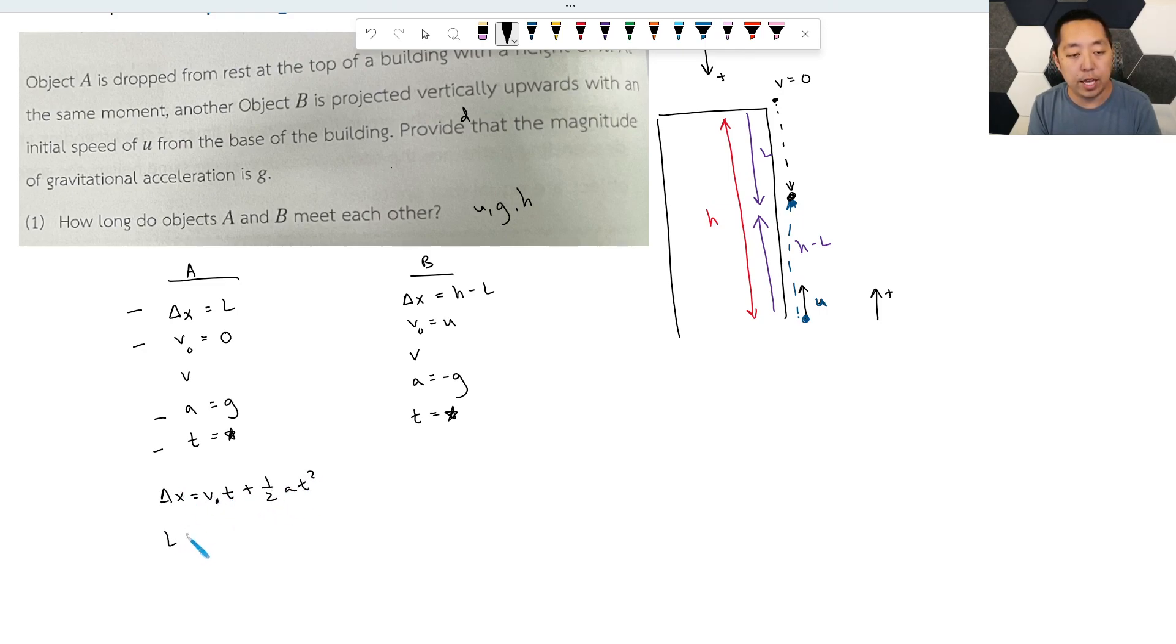So then you're going to say L is zero times T plus one half GT squared, or you get L is equal to one half GT squared. How about this guy? Same equation, but I plug in these variables. H minus L is going to equal to U times T, V zero T, and then one half G, that's going to be minus one half GT squared.